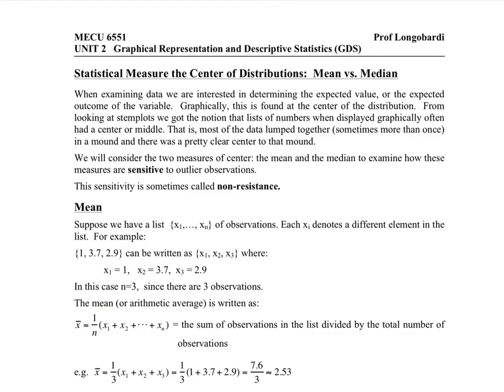Or in other words, sum together the observations and divide by how many there are. So multiplying by the reciprocal is the same as dividing by n.